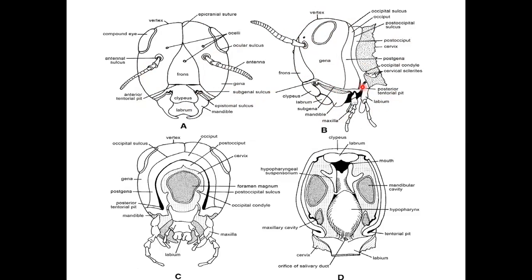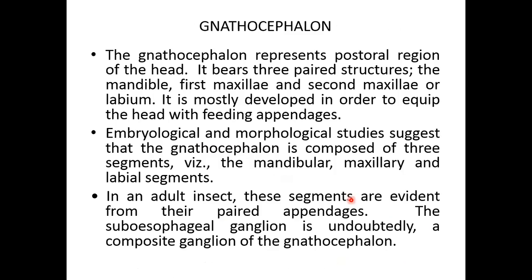The mandibles, maxillae, labium, posterior tentorial pit, occipital sulcus, occiput, post-occipital sulcus, cervix, and postgena are visible in the lateral and posterior views. In the posterior region there is the foramen magnum, through which the nervous system, alimentary canal, and visceral muscles pass to reach the thorax and abdomen. The posterior region bears three paired structures: mandibles, first maxillae, second maxillae or the labium.